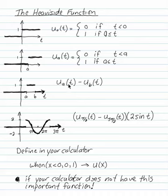One of the useful properties of the Heaviside function is if you take two Heaviside functions and subtract them, like u of a minus u of b, it's almost like turning on and off a light switch.